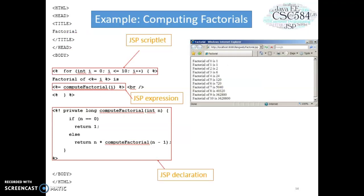Next let's look at the example of JSP scripting element. Basically, this is an example for computing factorial. You can see that I start with HTML start tag and then with the title factorial. In the body of the HTML, I use JSP. I start with JSP scriptlet. I have a for loop here.